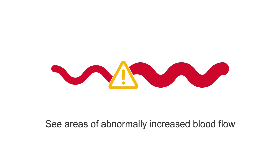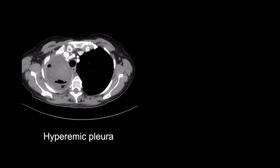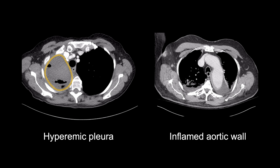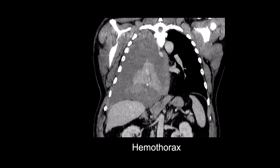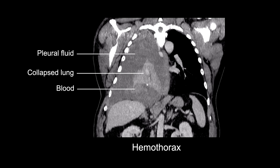The second scenario which requires IV contrast is when we want to see areas of abnormally increased blood flow. There can be two causes for this. The first is increased blood flow in a normal structure, such as hyperemic pleura in the presence of empyema or brighter vasculature in the presence of inflammation. The second cause is increased blood flow in an area where there shouldn't be any, such as a hemothorax. In this trauma patient, we can see free blood in the pleural effusion just below the lacerated, collapsed lung.